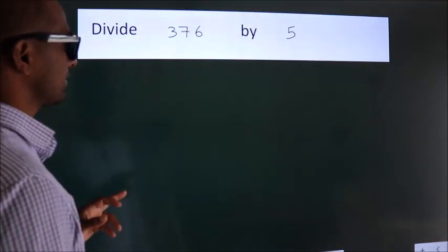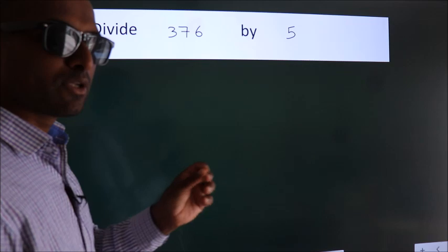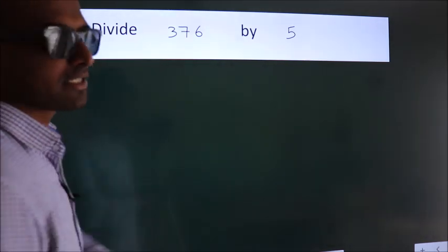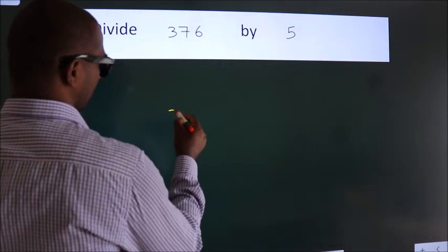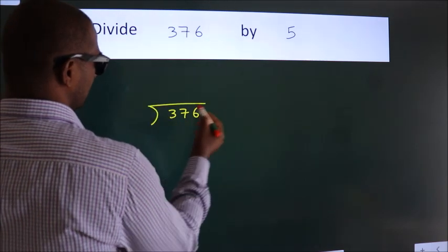Divide 376 by 5. To do this division, we should frame it in this way: 376 here, 5 here.